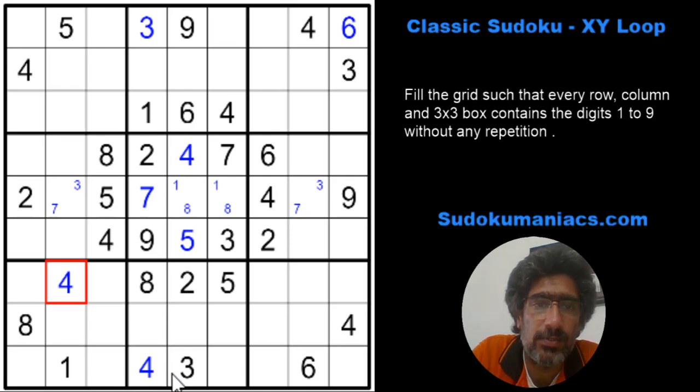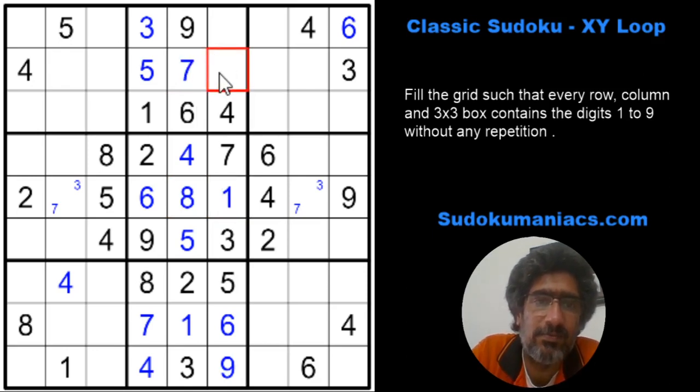3 cannot be here, so that's a 3. Next would be 6. Then 4, so that's a 4 and this becomes a 5. So that's a 7 because 1 and 8 are already there. We get a 1, 8 here which leaves us with 3, 7. That's a 4 and we have wrapped up all the 4s. Now, what next?